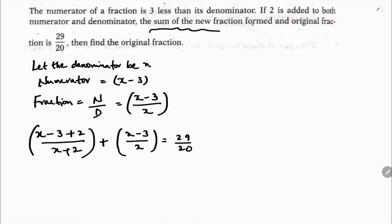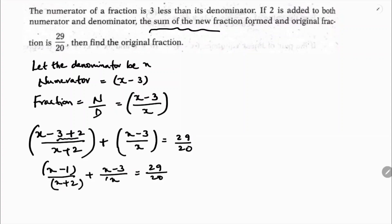Now, if I simplify this: x minus 3 plus 2 is x minus 1 by x plus 2, plus x minus 3 by x, equals 29 by 20. Now I will take LCM of these two. The LCM is x plus 2 times x.